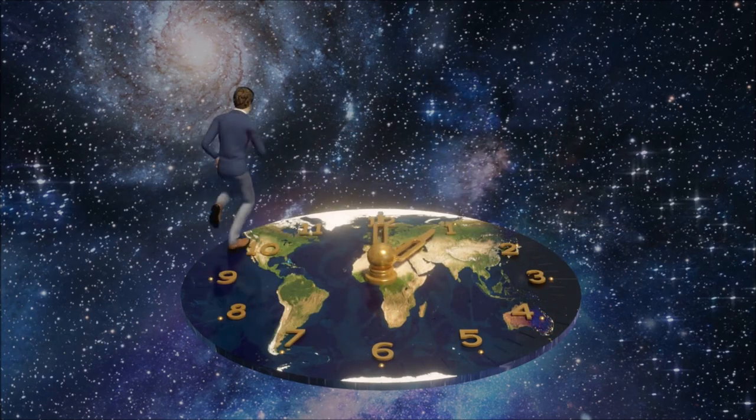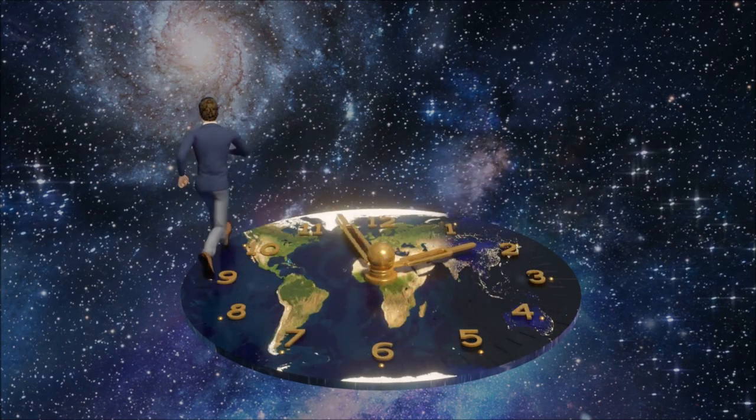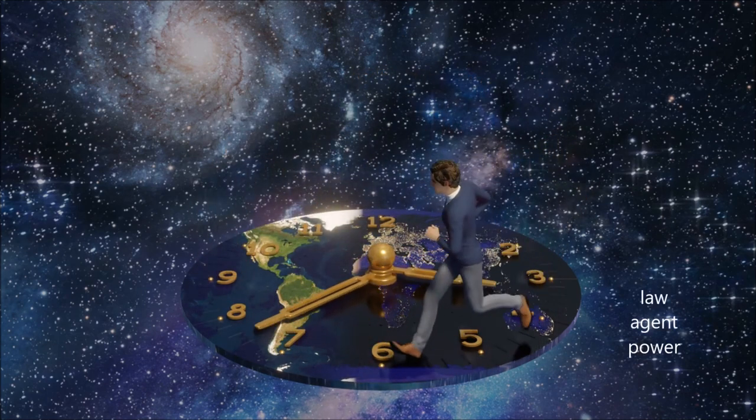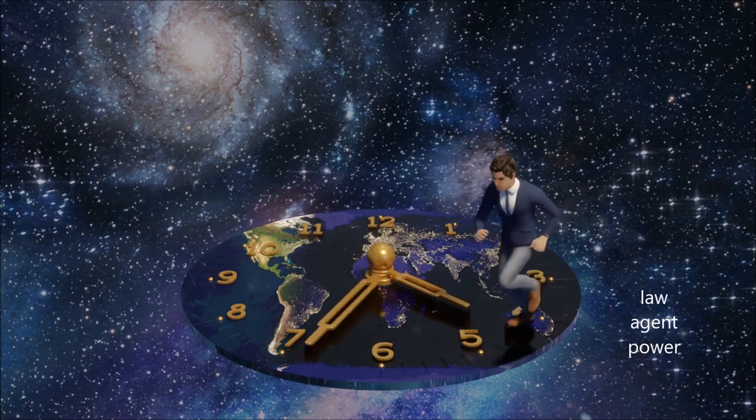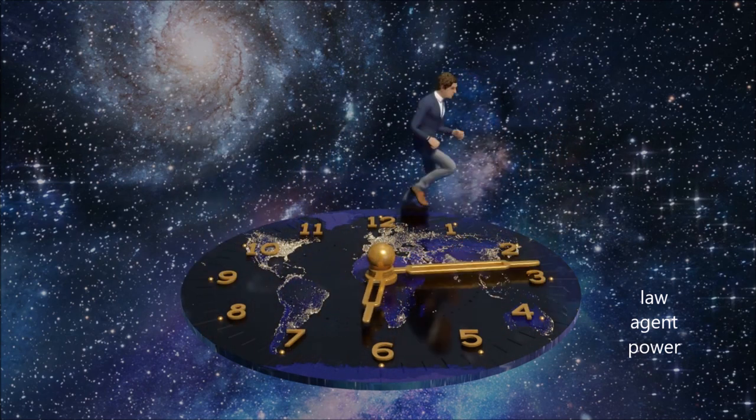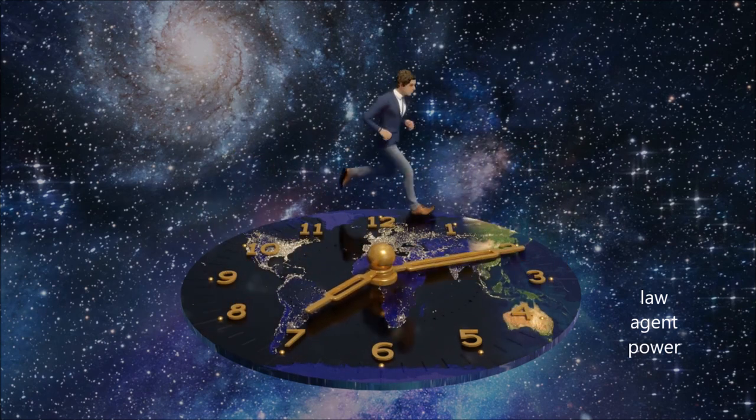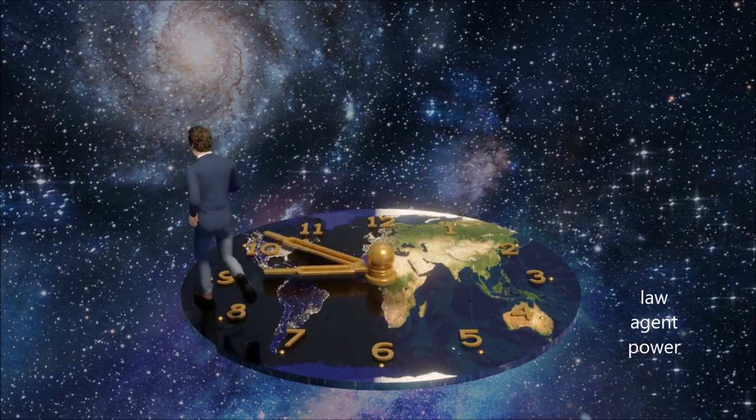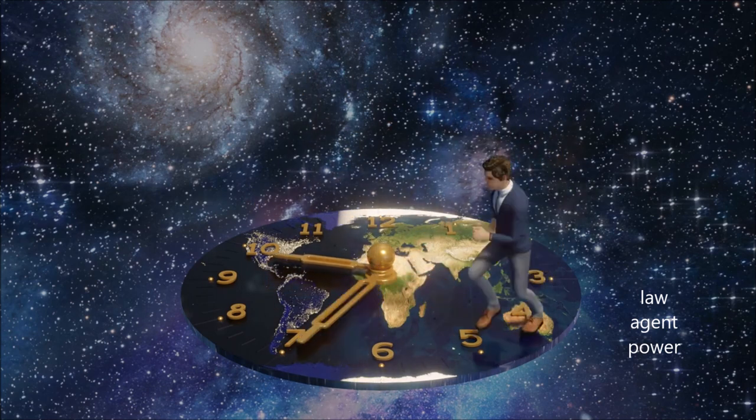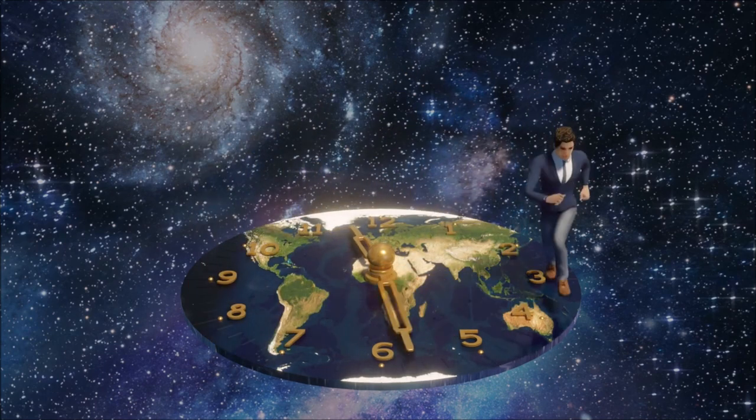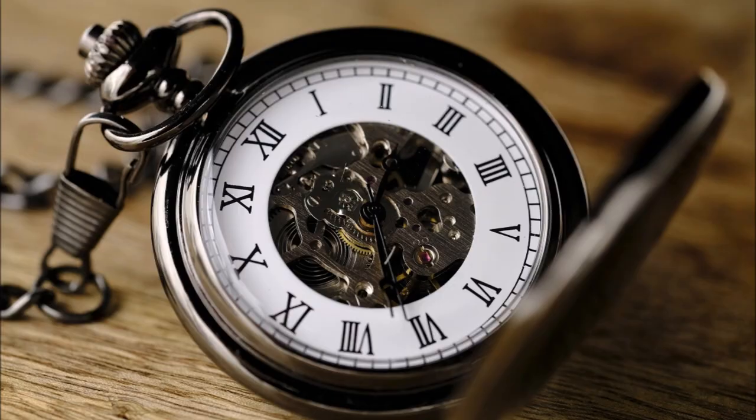And not less surprised to be informed that the watch in his hand was nothing more than the result of the laws of metallic nature. It is a perversion of language to assign any law as the efficient, operative cause of anything. A law presupposes an agent, for it is only the mode according to which an agent proceeds. It implies a power, for it is the order according to which that power acts. Without this agent, without this power, which are both distinct from itself, the law does nothing, is nothing. The expression 'the law of metallic nature' may sound strange and harsh to a philosophic ear, but it seems quite as justifiable as some others which are more familiar to him, such as the law of vegetable nature, the law of animal nature, or indeed as the law of nature in general, when assigned as the cause of phenomena in exclusion of agency and power, or when it is substituted into the place of these.